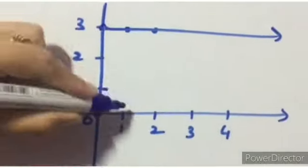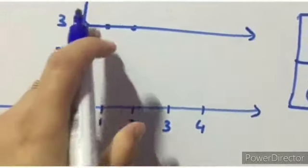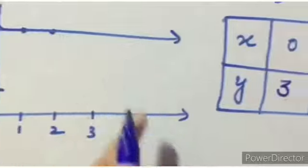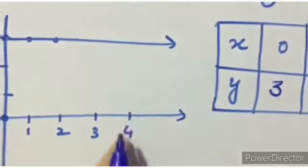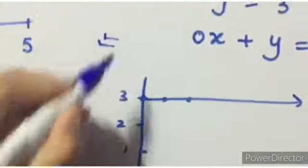Okay? First is 0, 3. Then 1, 3. Then 2, 3. You get an equation which is parallel to your x-axis. This is what you will get in part B.